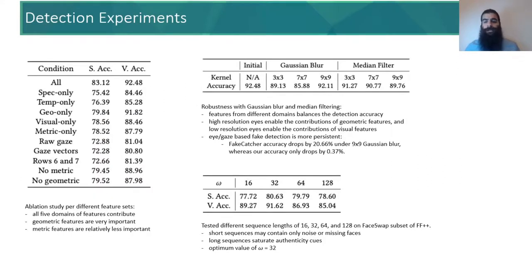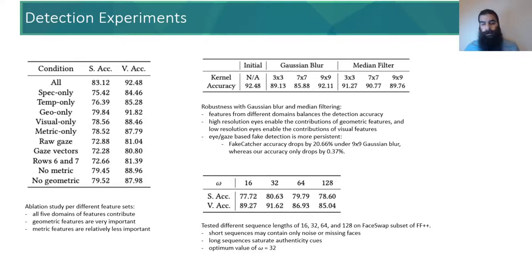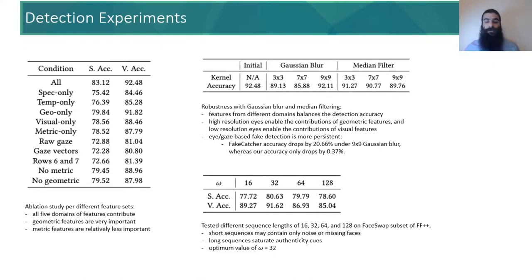We conduct ablation studies to evaluate the contribution of different feature spaces on accuracy. We conclude that geometric features are more important and metric features contribute less. We also experimented with different sequence lengths, finding that omega equals 32 as the ideal value. Finally, we measured our robustness against post-processing operations, discovering that features from different spaces balance each other — for example, high-resolution eyes enable geometric features and low-resolution eyes enable visual features.